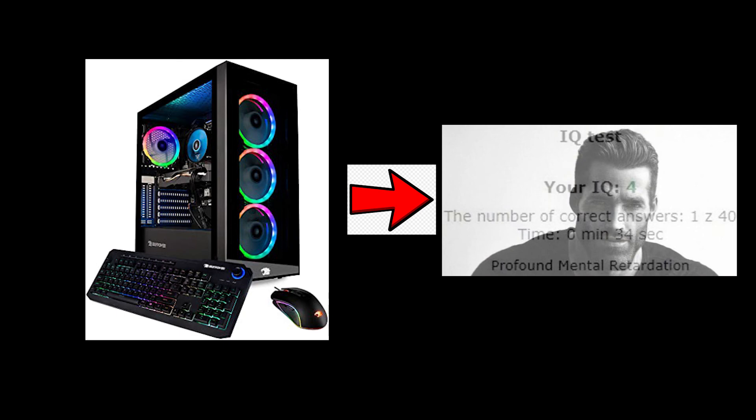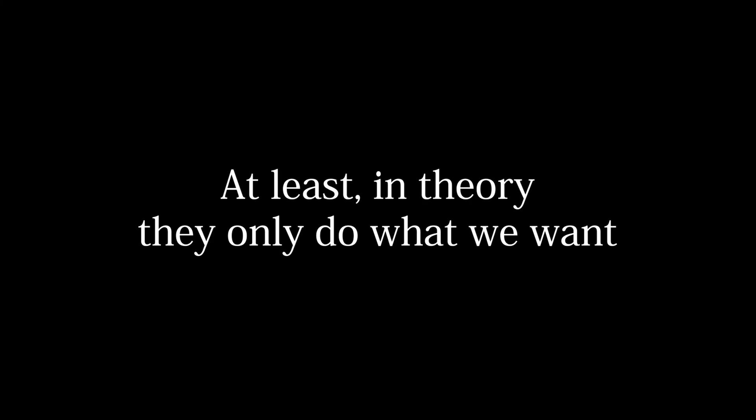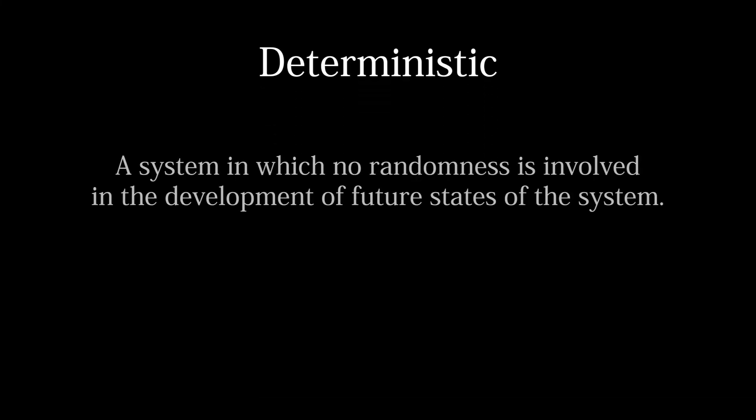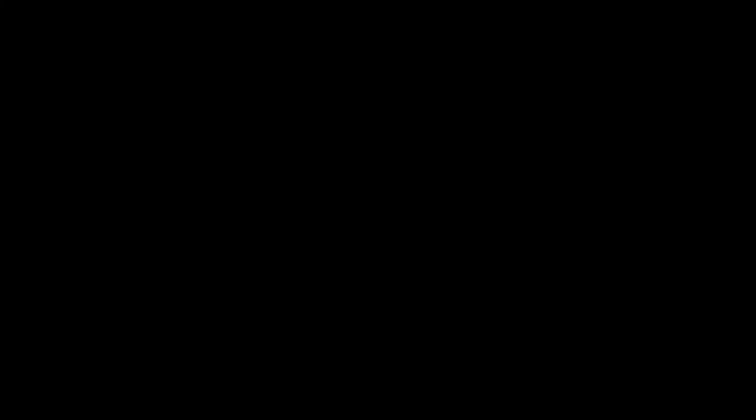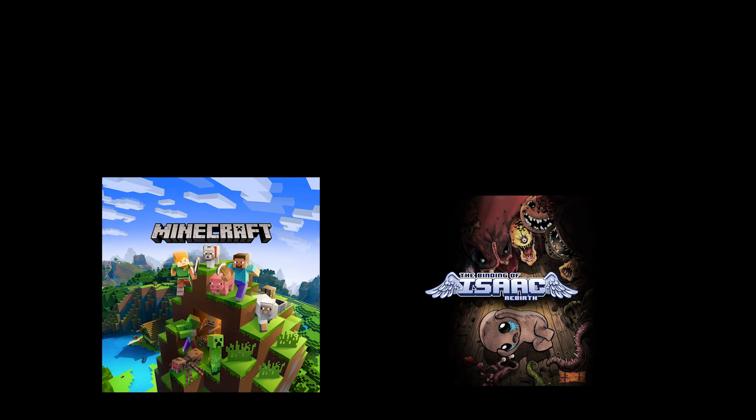Computers are stupid. They do only exactly what we tell them to do, and only that, as it would be rather inconvenient for us if they did anything else or anything more. This is known as deterministic behavior — a system in which no randomness or variance is involved. This poses a problem when we do want some sense of randomness in our system. How can you do that when computers are completely deterministic?